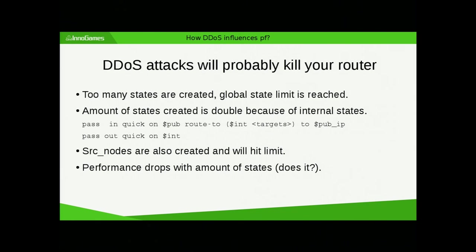When the limit is reached — say you allow one million states on your machine — if there are more, legitimate customers will not be able to connect even if your PF can handle it. Because of internal states, you will have double the amount of states. For example: pass in on public, if the traffic goes to this rule, route it to another machine — but then it still has to leave your load balancer, so you have a second pass out rule.